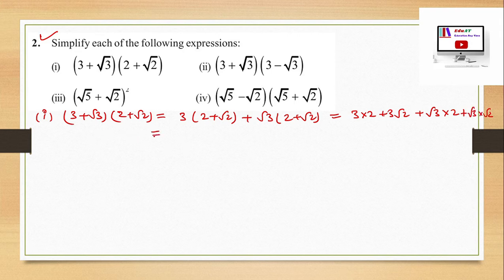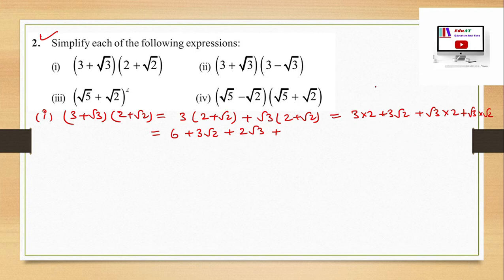Continuing Part 1: 3×2 is 6, so we get 6 + 3√2 + 2√3 + √3×√2. Now √3 × √2 equals √(3×2), which is √6. So the final answer is 6 + 3√2 + 2√3 + √6.